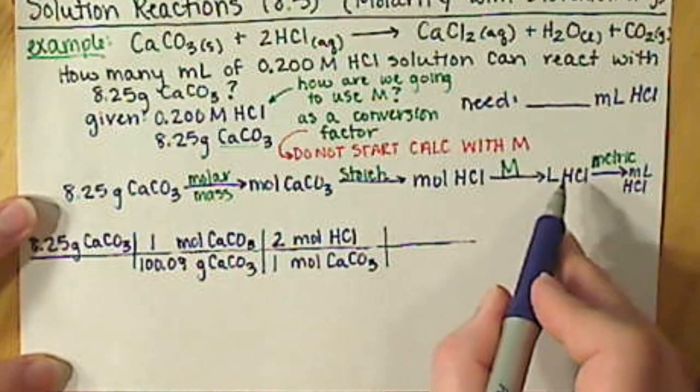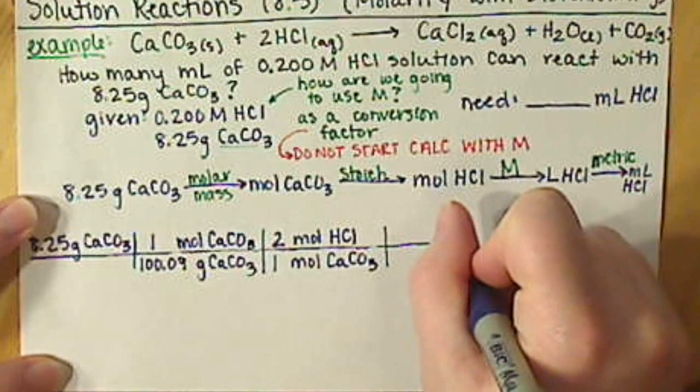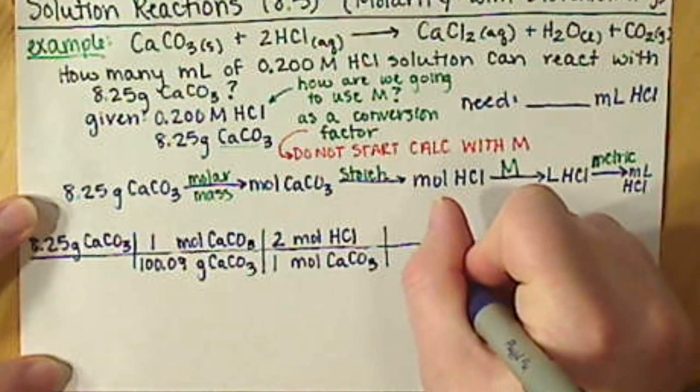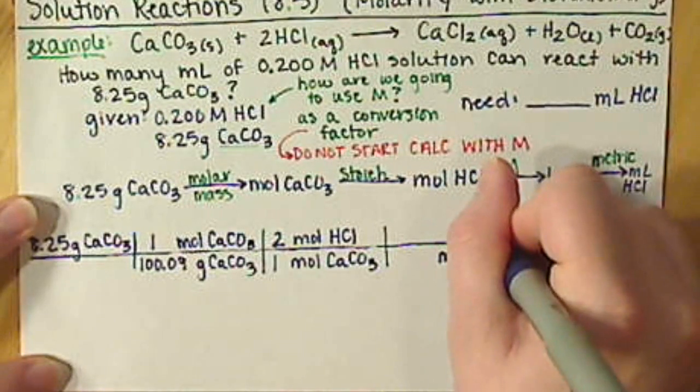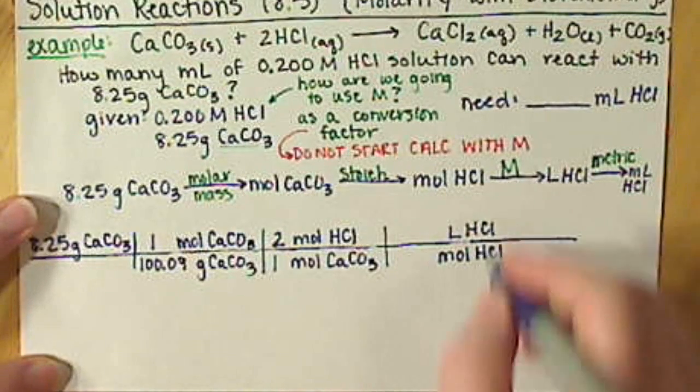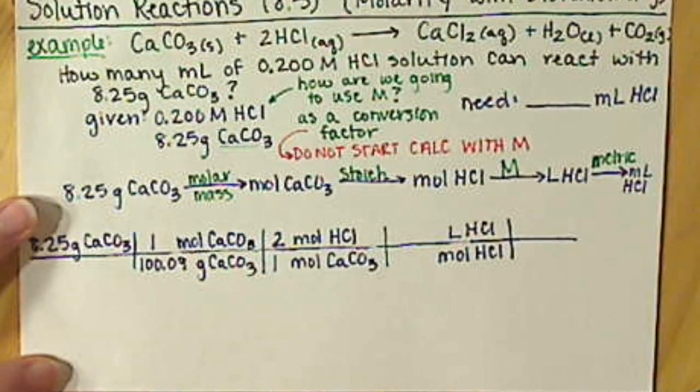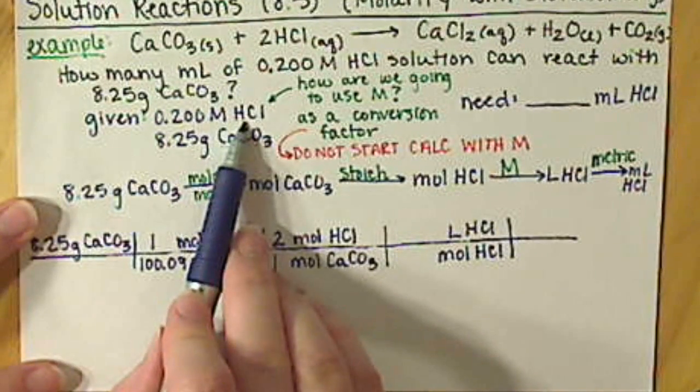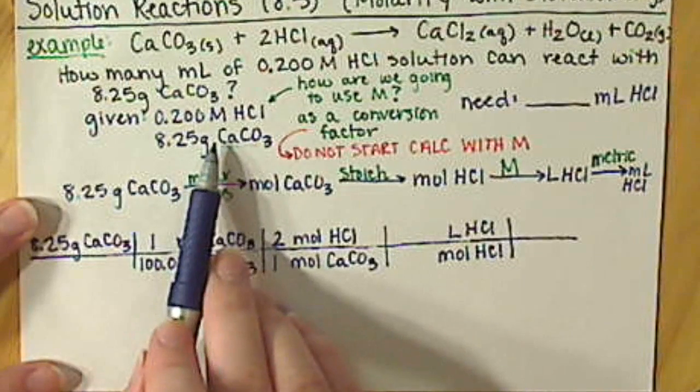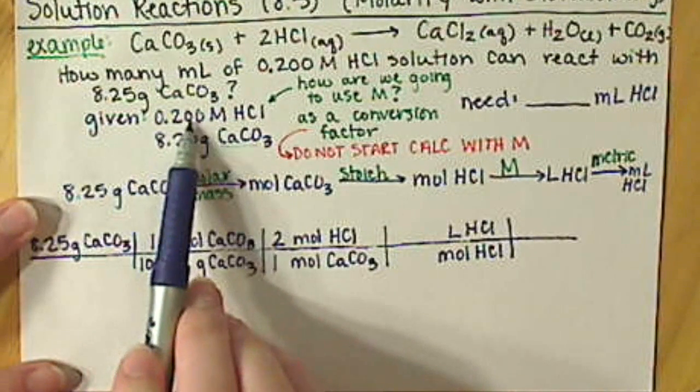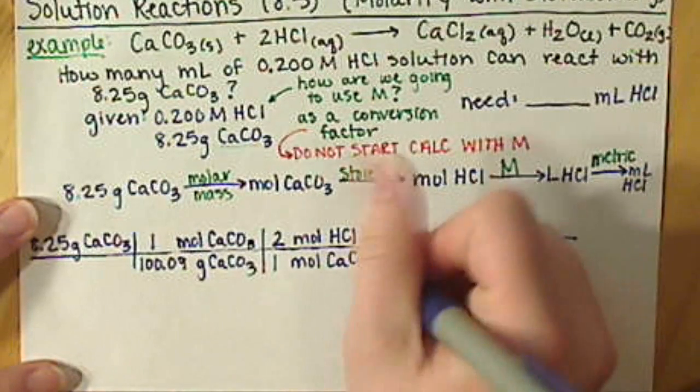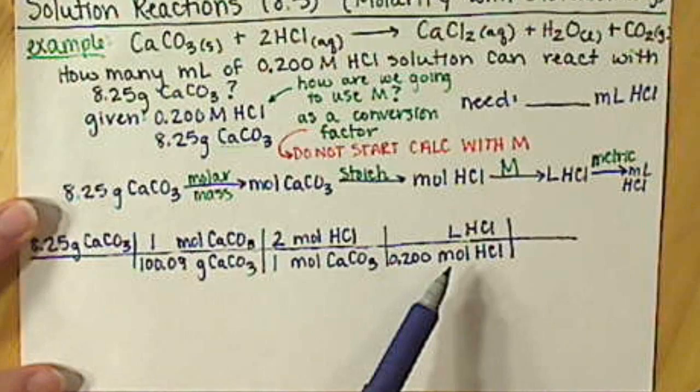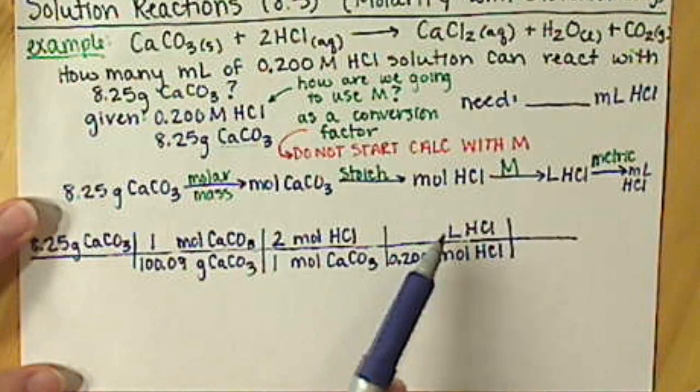We use our coefficients for that from our balanced chemical equation. Our coefficient in front of HCl is a 2. Coefficient in front of calcium carbonate is a 1. Next step, using molarity to go from moles of HCl to liters of HCl. So I have moles of HCl in the denominator so that these cancel out. Remember, it's all about canceling units. Then we want to go to liters of HCl. We use our molarity to fill this in. So we have a 0.200 molar HCl solution. Molarity means moles per liter. So what this means is we have 0.200 moles per one liter.